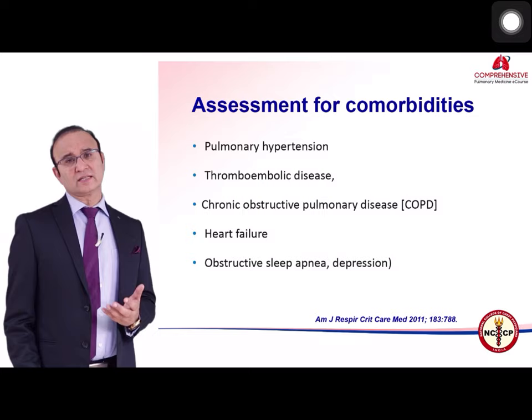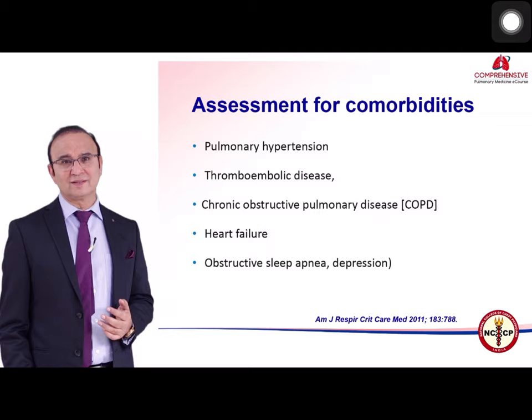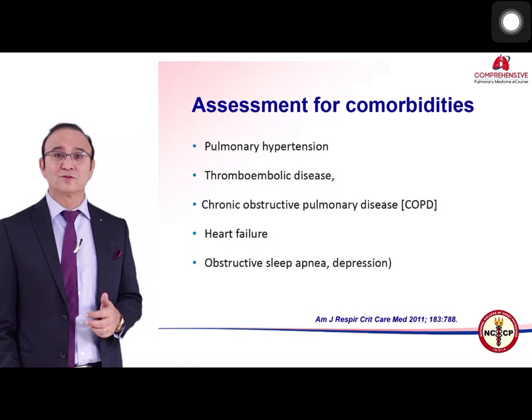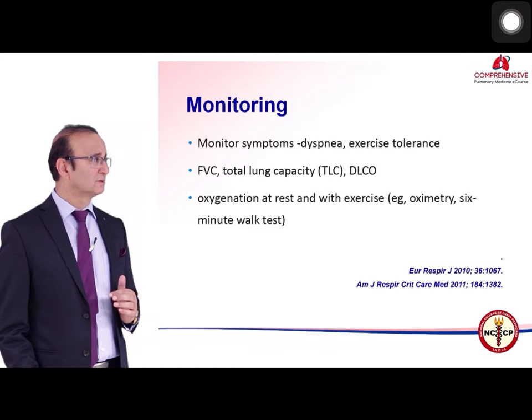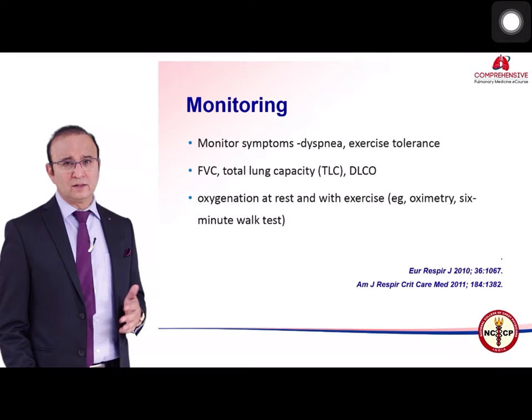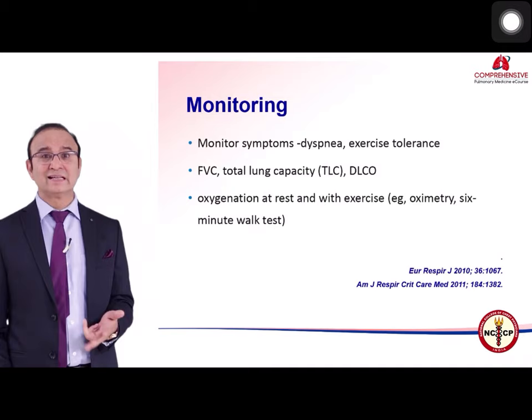Comorbidities must be assessed, including pulmonary hypertension, thromboembolic disease, COPD, heart failure, obstructive sleep apnea, and depression. One should rule out that symptoms are due to these conditions rather than the primary illness. Monitoring includes dyspnea, exercise tolerance, FVC, total lung capacity, diffusion capacity, and oxygen saturation at rest and with exercise using oximetry and a 6-minute walk test.